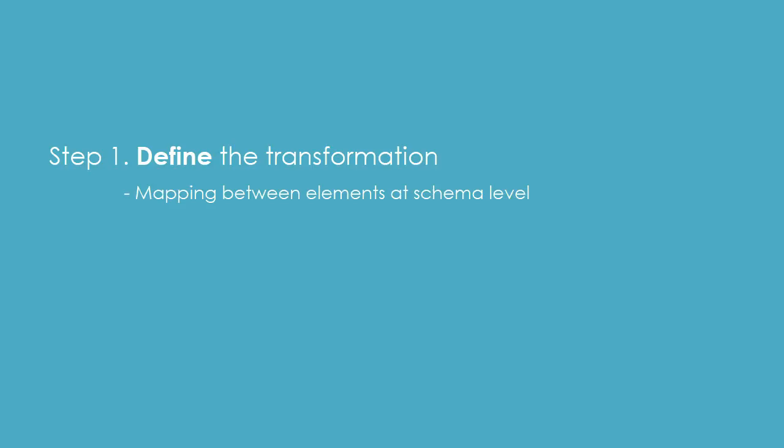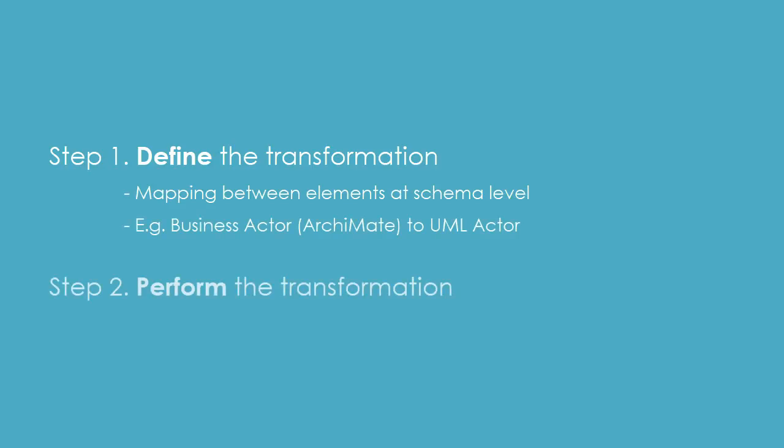For example, you define a transformation from an Archimedes diagram to a use case diagram, which involves mapping an Archimedes business actor to a UML actor. The second step is to perform the transformation by applying the definition on a diagram. So if you've defined the transformation that maps business actor to UML actor, by applying it on an Archimedes diagram, use cases will be created automatically from the business actors.